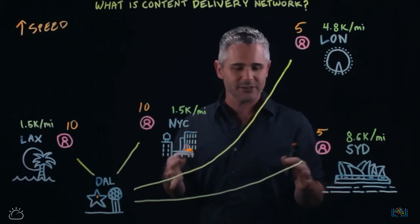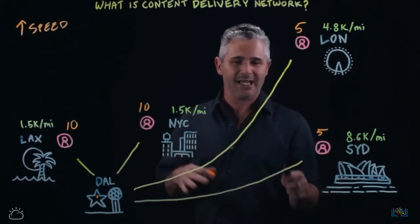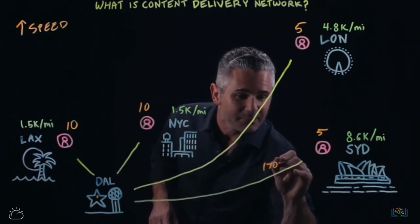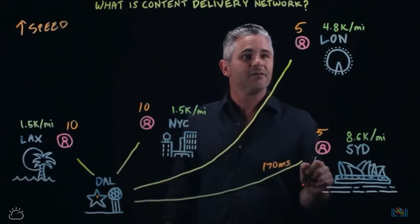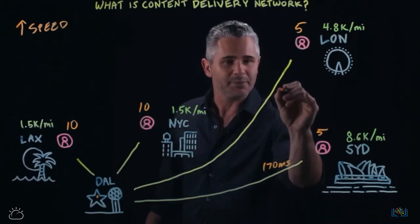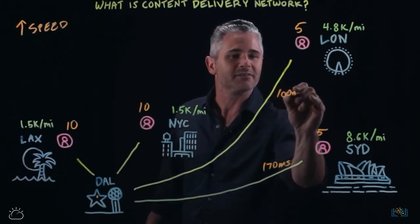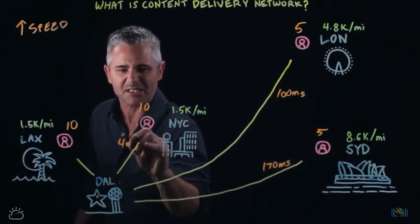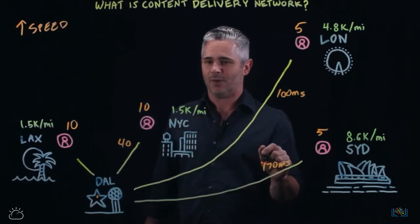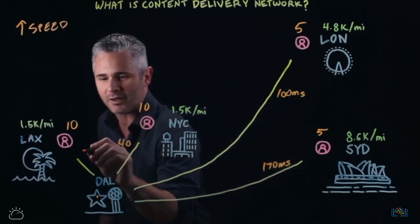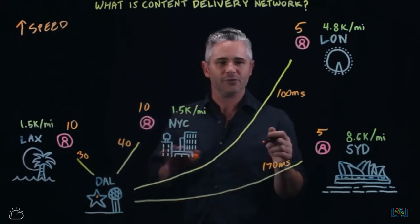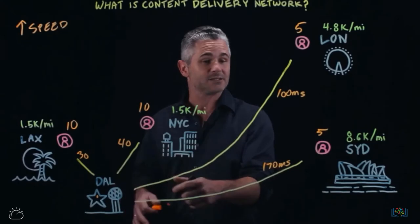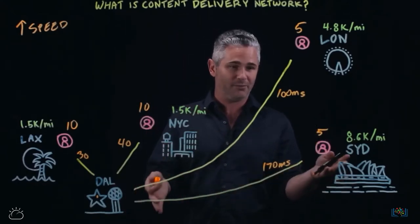The amount of time that takes is measured in milliseconds, and that round trip might be about 170 milliseconds for Sydney. For users in London, that might be about 100 milliseconds. Users in New York City can experience about a 40-millisecond round trip time, and over in LA, about 30. As you can see, the further away you are, the longer it takes — ultimately the slower the website will be for you.